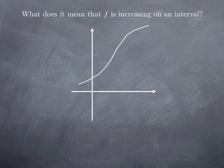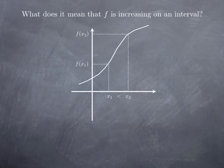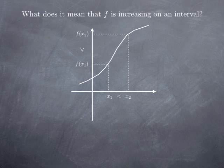Let's try to formalize this idea that the graph rises as we move from left to right. Moving from left to right means that if I pick a value x1 and move to a point on its right — in other words a value of x that is greater — then the corresponding y values should rise, should get bigger. In other words if x1 is less than x2, meaning I move from left to right from x1 to x2, then f of x1 should be less than f of x2 — that is, I'm moving up for the y value.